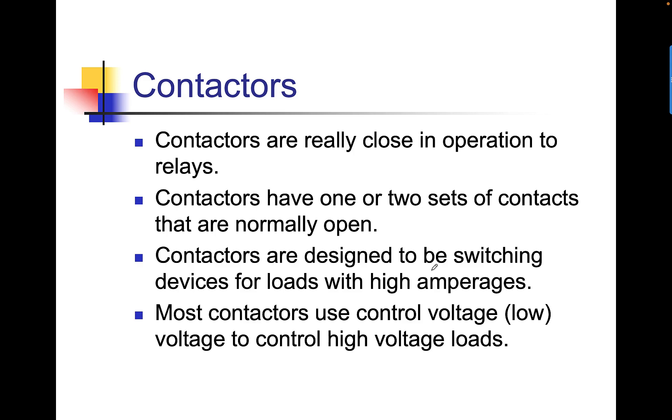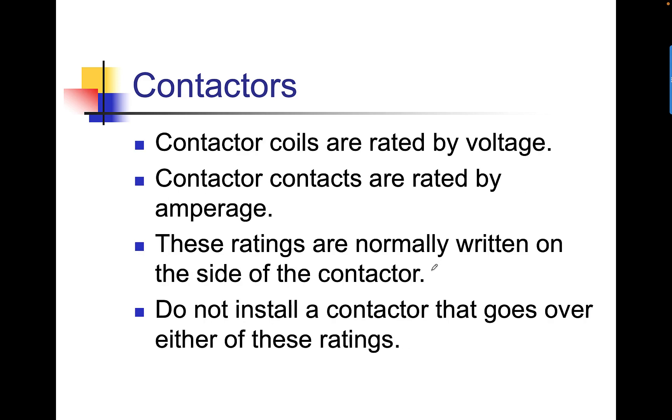Contactors are really close in operation to relays. A contactor has one or two sets of contacts that are normally open. Contactors are designed to be switching devices for loads with high amperages. Most contactors use control voltage to control high voltage loads. We use low voltage controls that control high voltage loads. Contactor coils are rated by voltage. Contactor contacts are rated by amperage. Sound familiar? It's the same as the relay. These ratings are normally written on the side of the contactor. Do not install a contactor that goes over either of these ratings.